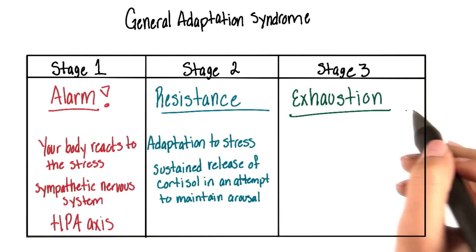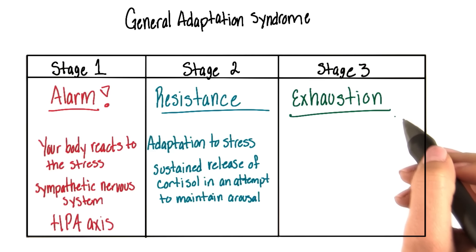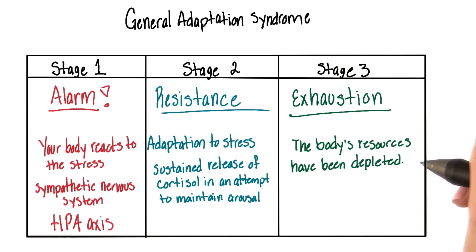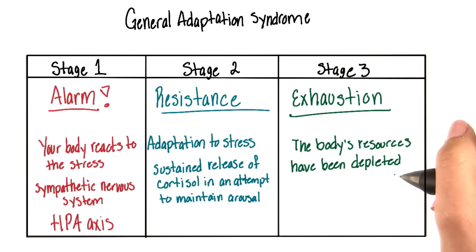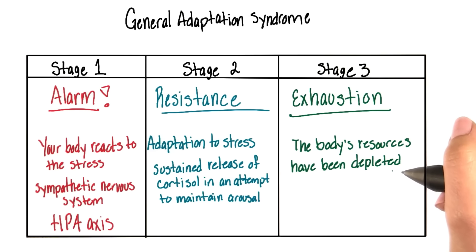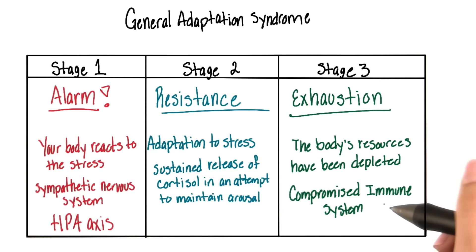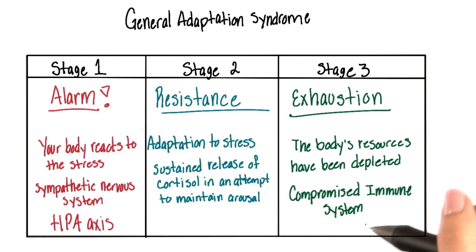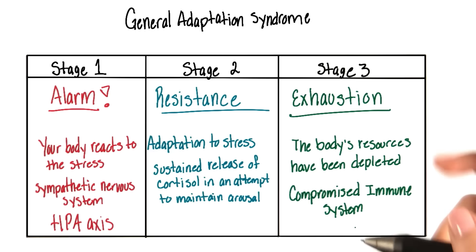And finally, we have the exhaustion stage. This is when our body's resources have been depleted in an attempt to deal with the threat or stressful situation. As a result of this depletion, our immune system is weakened, making it more likely that we experience illness and infection.